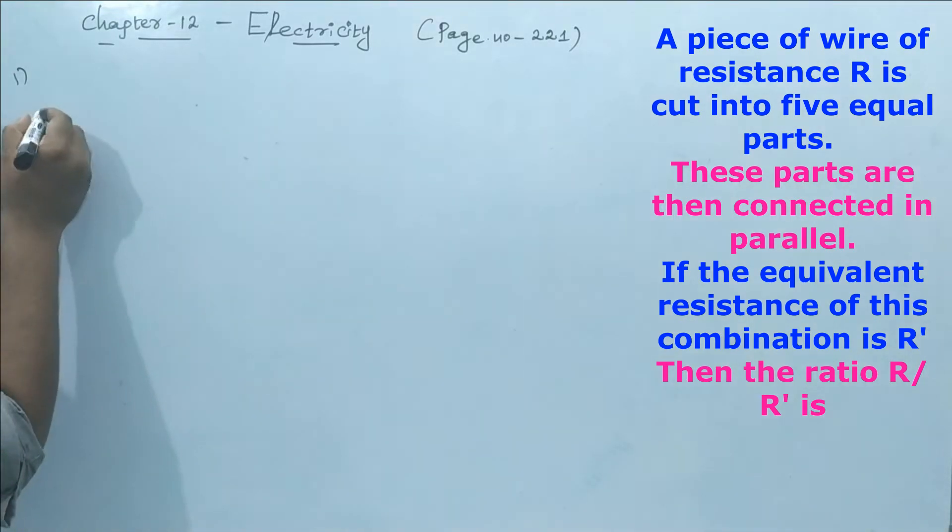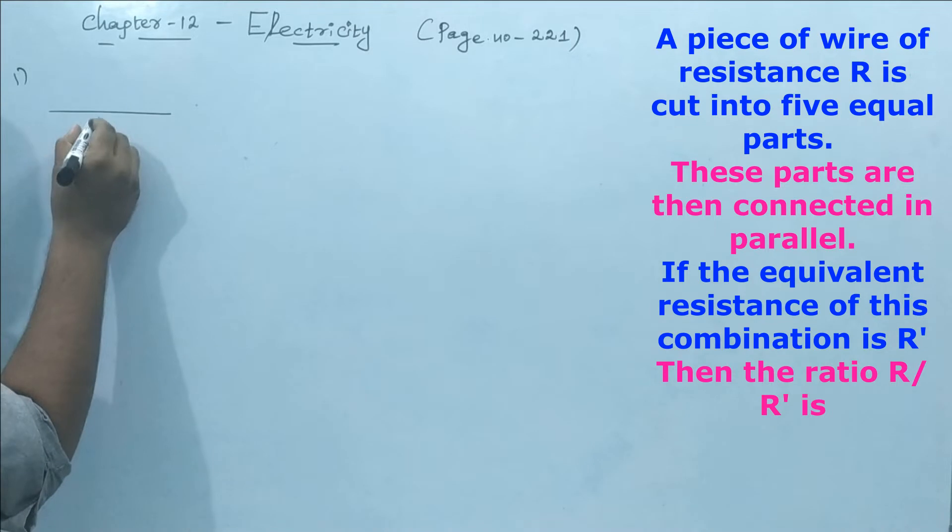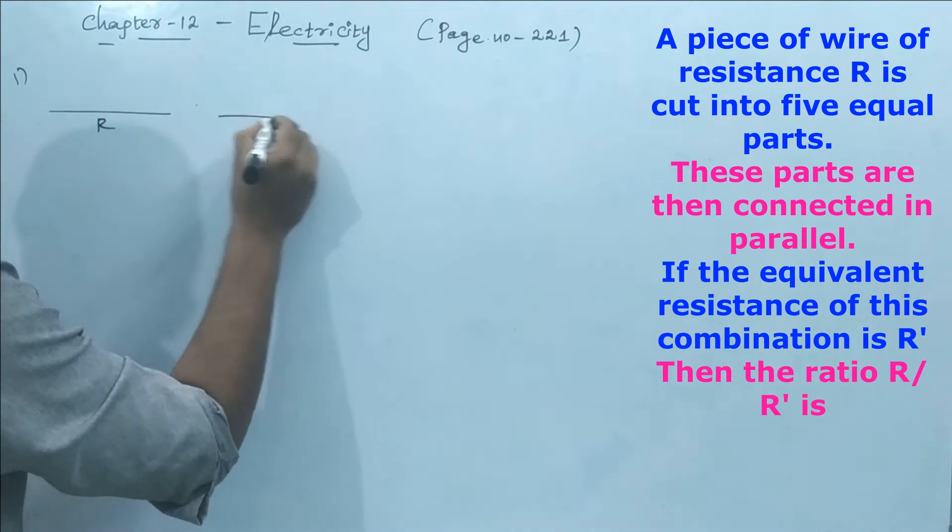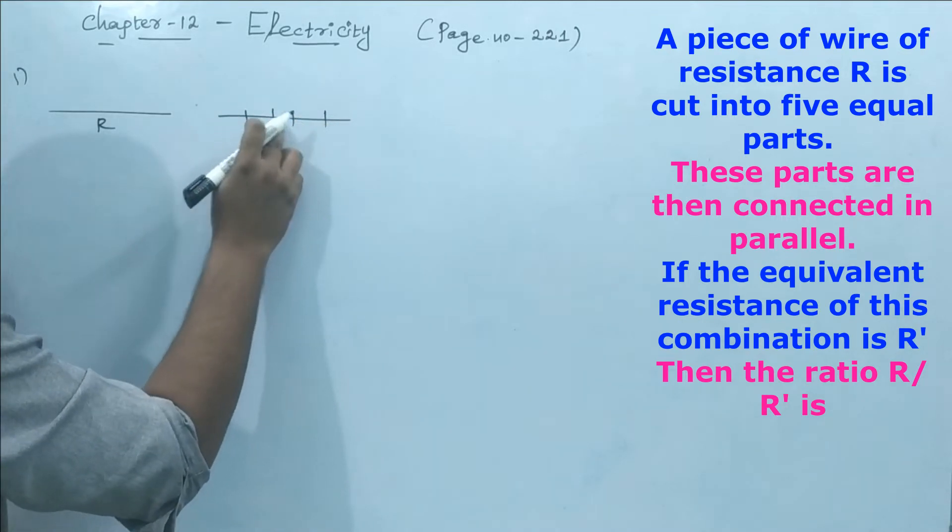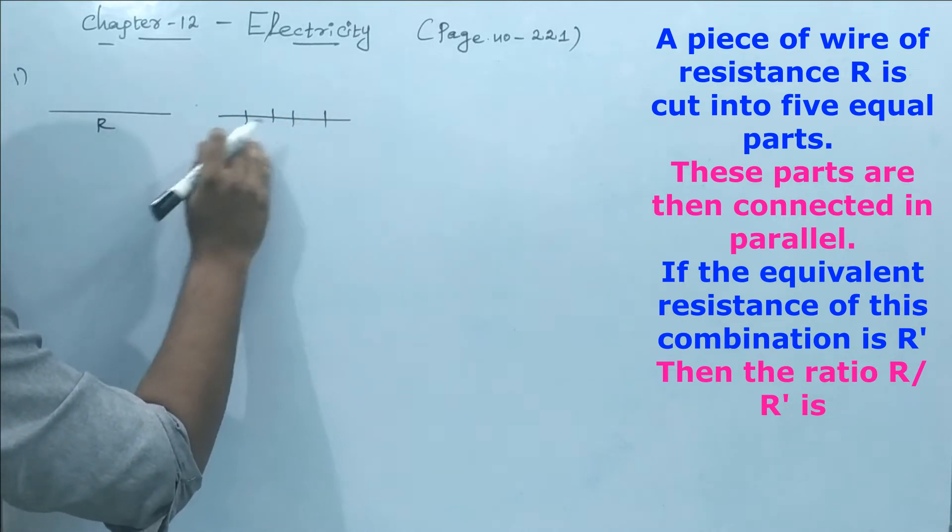First, they are taking one piece of wire with resistance R. Then this piece of wire is cut into five equal parts: one, two, three, four, five. Then what about each resistance? Each resistance becomes R by 5.